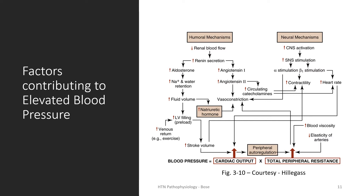This flowchart shows the neurohumoral mechanisms that come into play when there is reduced blood pressure and how the body seeks to increase it back to normal. In the case of high blood pressure, these processes are reversed to allow for reduction. Pharmacologic therapies target many of these neurohumoral processes to achieve blood pressure reduction.